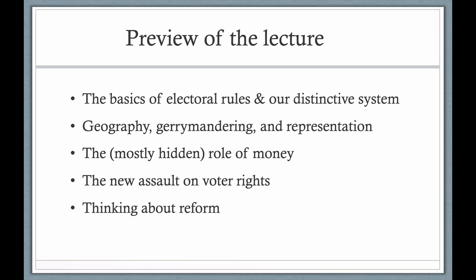Here's a brief preview of today's lecture. We're going to start with the basics of America's electoral rules and how they differ from the systems we see in other rich democracies. The structure of our electoral system is really important for understanding some of the problems that have become more manifest in the last generation, particularly problems surrounding the drawing of congressional districts and the lack of competitiveness of many congressional seats. After we look at issues of geography, gerrymandering, and representation, we'll turn to the role of money.